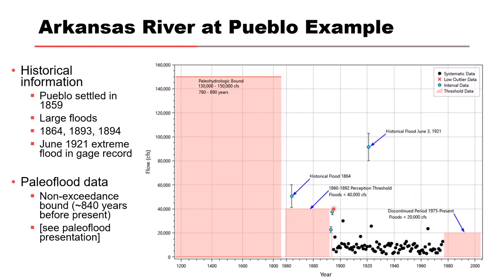Perception thresholds are shown as solid red areas, and we'll talk more specifically about those later. Regarding the Q&A: we have systematic data prior to and after 1921. The 1921 flood occurred within the systematic period of record, but most likely the gauge got washed out, and there's probably some uncertainty about how big that flood really was — likely estimated using high water marks and cross sections to calculate discharge indirectly.